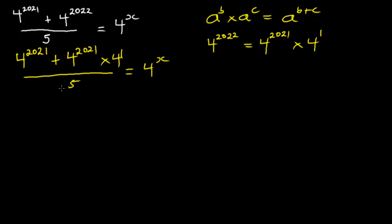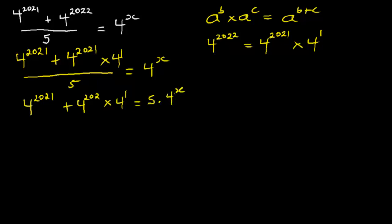We want to do away with the fraction, so we just multiply through by five. Multiplying by five we are going to be left with four exponent 2021 plus four exponent 2021 times four exponent one, is equal to five times four exponent X.